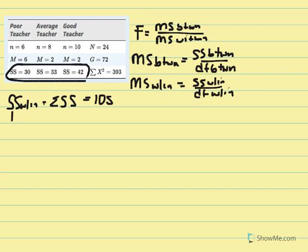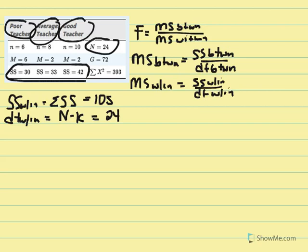Now we can calculate our DF for within. DF within equals N minus K. In this case N equals 24 and we have three conditions, so 24 minus 3 gives us 21. We now have SS within which is 105 and DF within which is 21, giving us MS within equal to 5.